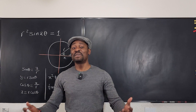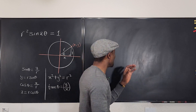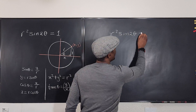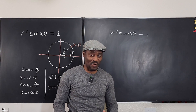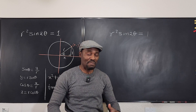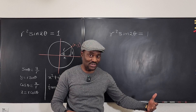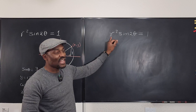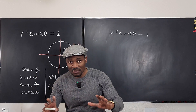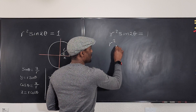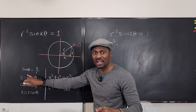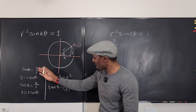In other videos, I'll keep explaining more about polar coordinates. For now, let's answer this question: r squared sine 2 theta equals 1. My general advice when transitioning from polar to rectangular is to focus on sine and cosine first. Don't change r squared right away. We don't have 2 theta, we only have sine theta, so we need to expand sine 2 theta using the double angle identity.